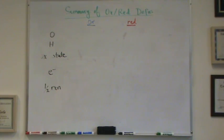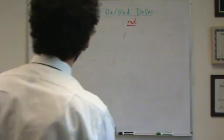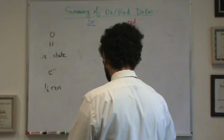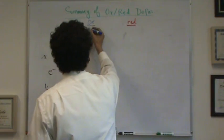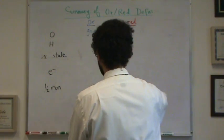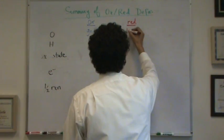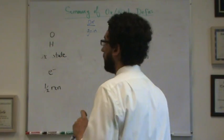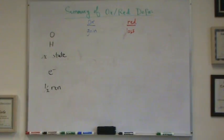The first definition has to do with oxygen. For oxygen, if you have an oxidation, you have gained oxygens. If you have a reduction, you have a loss or lost oxygens. If you see more oxygens in the products than the reactants, that's an oxidation. If you see less, that's a reduction.